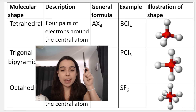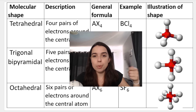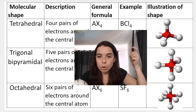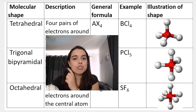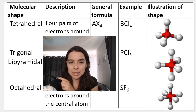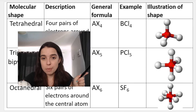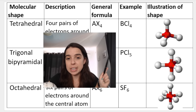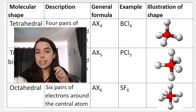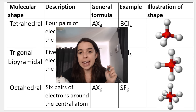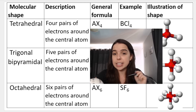Then we have tetrahedral — four pairs of electrons around the central atom, general formula AX4, example BCl4. Then trigonal bipyramidal — five pairs of electrons, example PCl5. And then octahedral — six pairs of electrons, general formula AX6, example SF6.